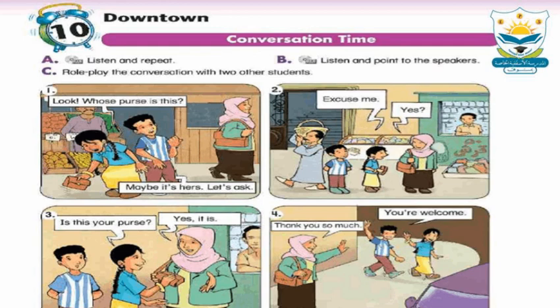This conversation is about Ali and Sara, who found a purse. They don't know who it belongs to. They see a woman and think maybe it's hers. Ali and Sara went up to the woman and asked her. The purse is hers, and the woman is very happy. She thanked them.